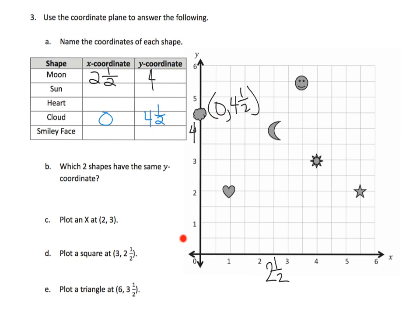Meaning, it's zero on the x-axis, and the y-coordinate is four and a half. Similarly, if we wanted to do that for the moon, we would say the moon is located at two and a half, comma, four. Meaning, the moon is located at two and a half on the x-coordinate, and it's located at four on the y-coordinate. And so it's located at two and a half, comma, four.